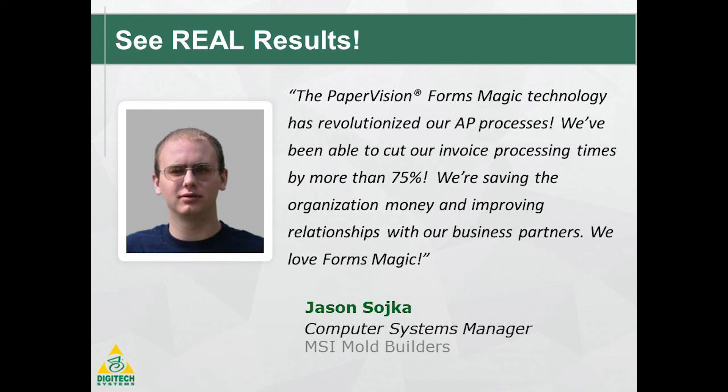For example, MSI Mold Builders is a small manufacturer in Iowa that makes manufacturing molds for customers in a variety of industries, including medical, automotive, and recreation. They use the Forms Magic technology to simplify the processing of more than 1,200 monthly invoices. Thanks to the AI Assist, they have reduced invoice processing time from more than one hour down to just 15 minutes. And they have lowered the processing cost per invoice from about $63 to less than $16, saving the company more than $676,000 annually.